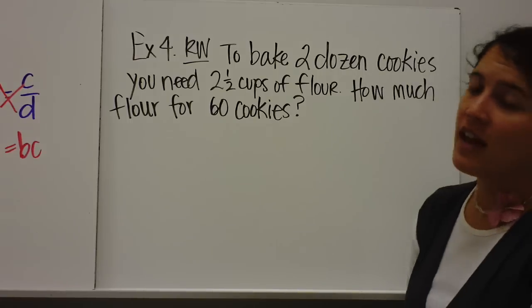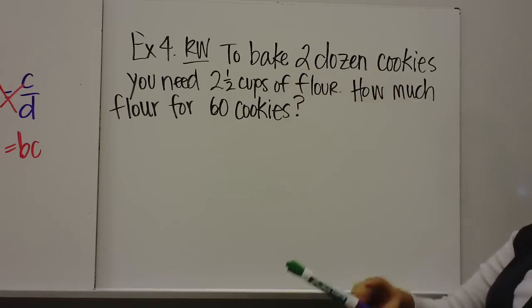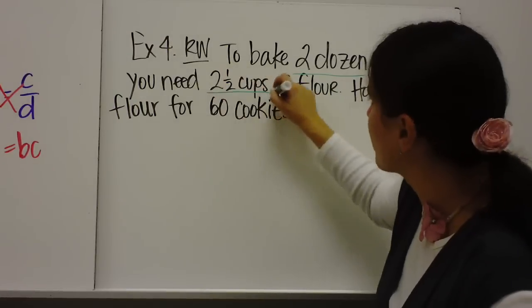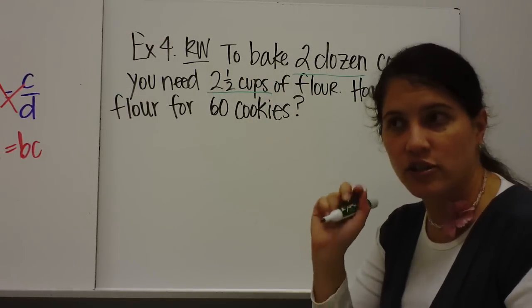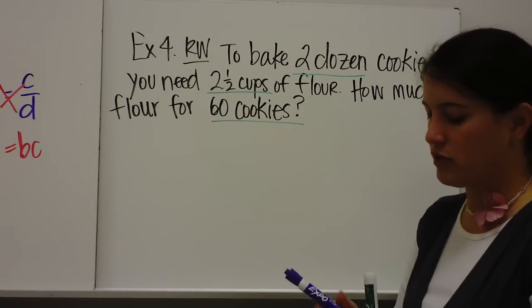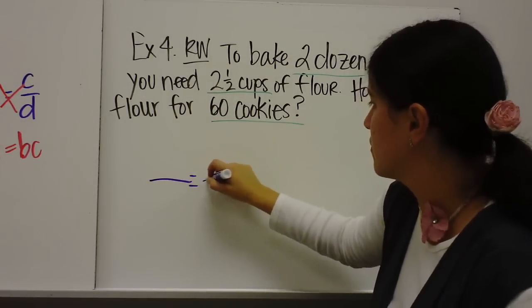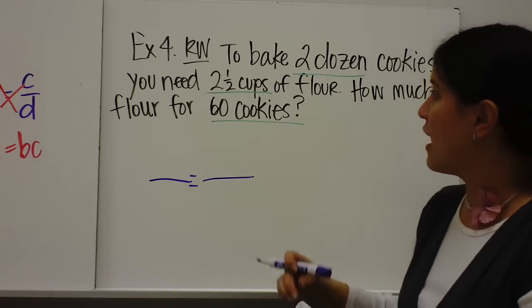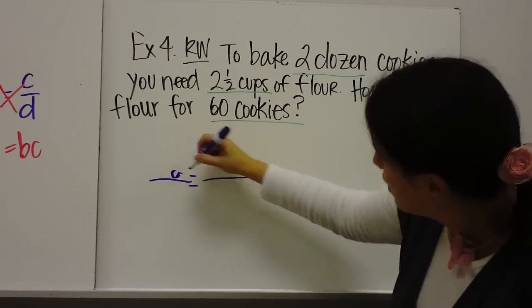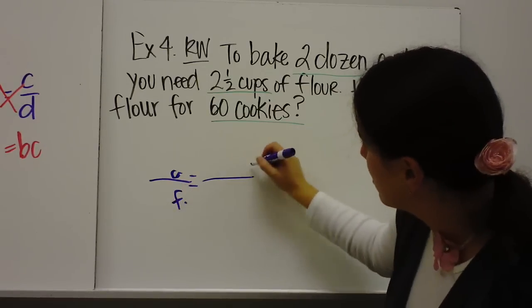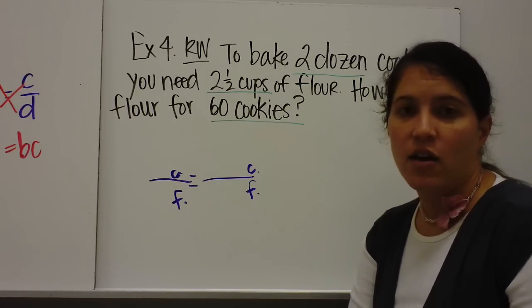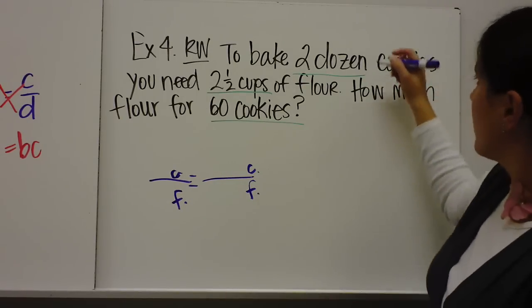Alright. So example four, another real-world problem. To bake two dozen cookies, you need two and a half cups of flour. How much flour for 60 cookies? So again, we are going to set up a proportion. And I know I'm going to be comparing cookies to cups of flour. So I'm just putting my labels on. I'm comparing cookies to cups of flour. But do you notice anything about the cookies?